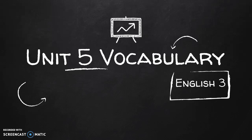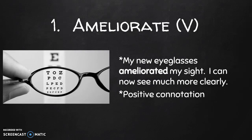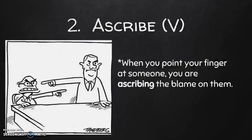Hi everyone, this is your unit 5 vocabulary for English 3. The first word on our list is ameliorate, which is a verb. The definition for ameliorate is to make better, less painful, or to improve. An example sentence is: my new eyeglasses ameliorated my sight. It has a positive connotation since it is talking about making something better.